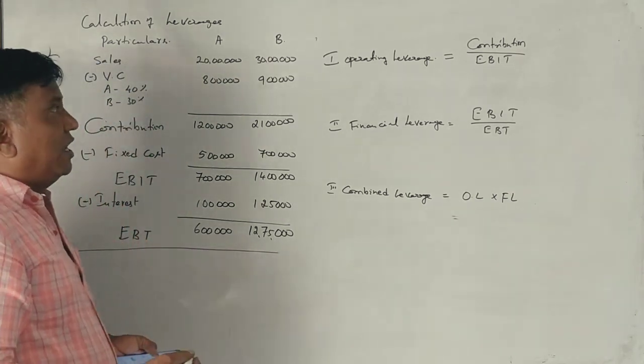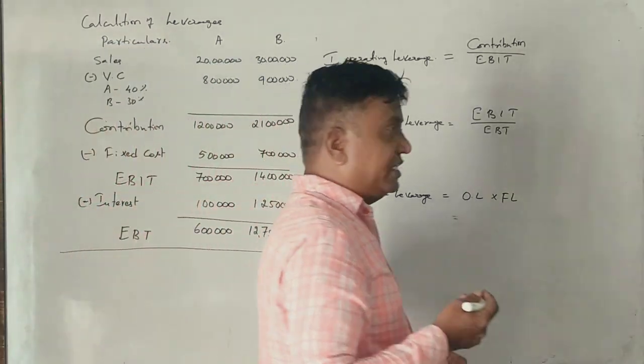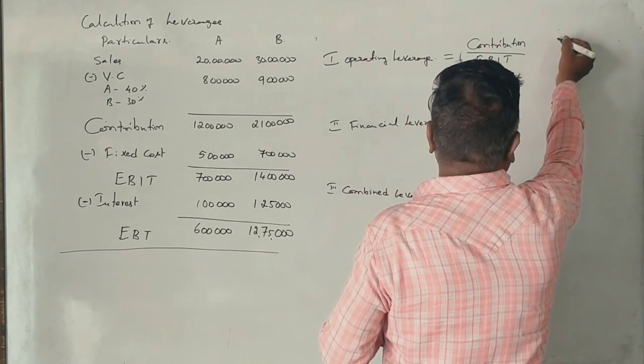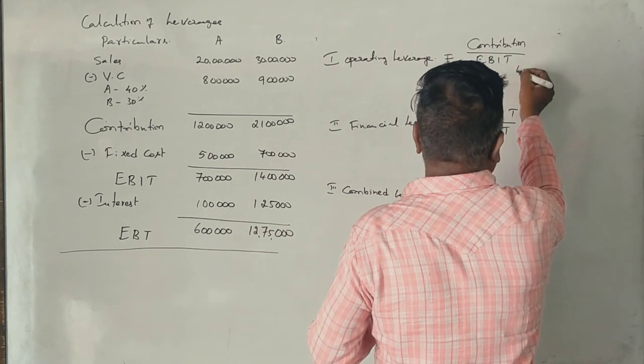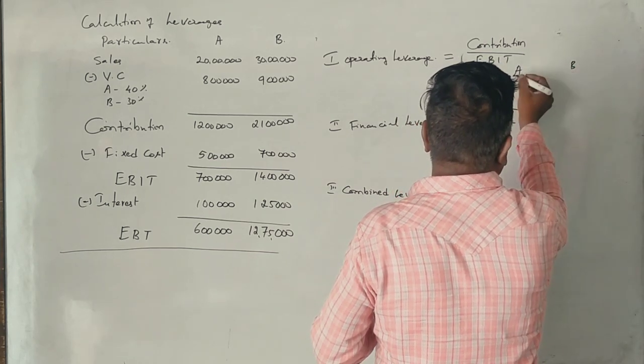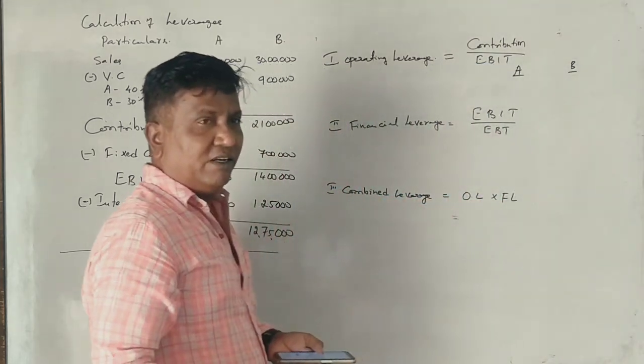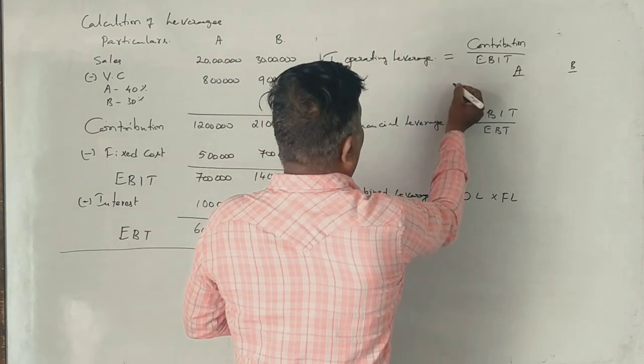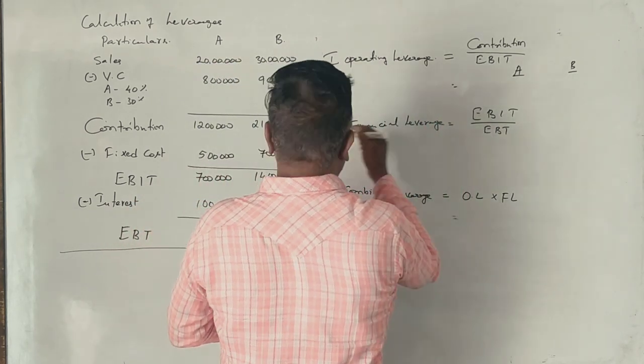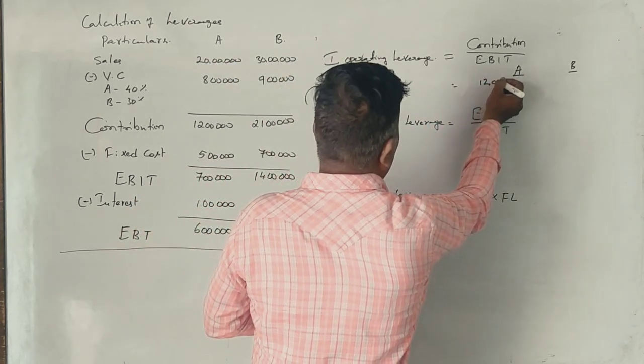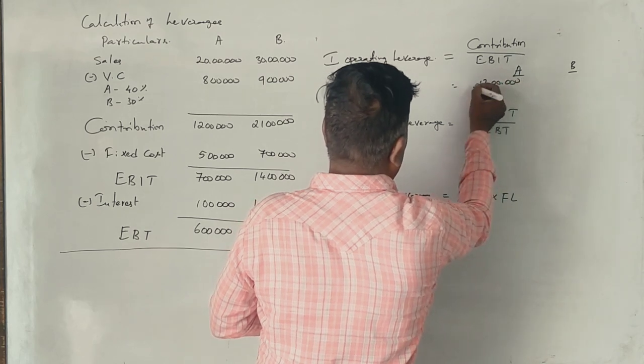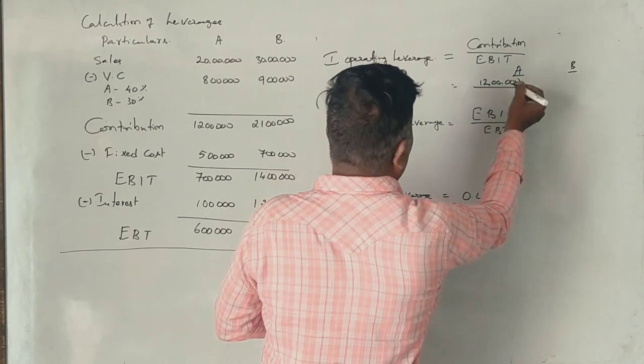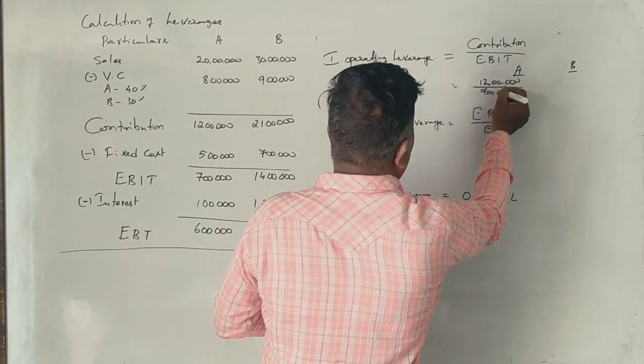So now, what about the leverage? For Firm A, the contribution is 12 lakhs divided by EBIT is 7 lakhs.